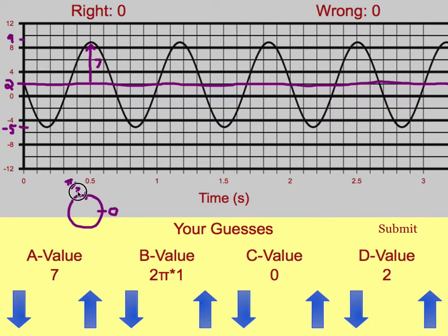If you start at the lowest point, that would be 3 pi over 2. And if you start in the middle heading down, that would just be pi. In this case, we are starting in the middle going down, so that is a phase shift of pi.